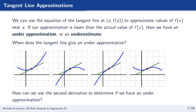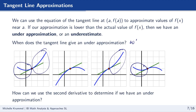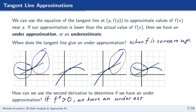Conversely, it's an under-approximation when the tangent line is below the curve, which is where the curve is concave up. So when f double prime is greater than zero, the function is concave up and we get an under-approximation.